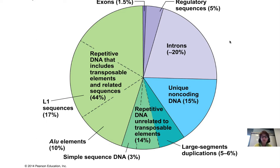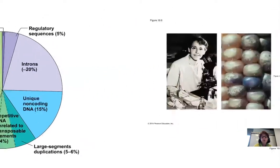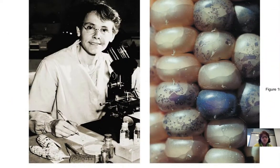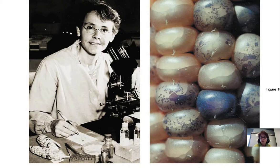I don't expect you to memorize all of these — I'd like you to be aware of the complexity of the genome and maybe be excited that there is something to study when you go off to grad school. Barbara McClintock did her work in the middle of the 1900s — the 1940s, 50s, 60s — and she continued working into the 80s and 90s. She was very meticulous, studied corn or maize, and studied color changes in corn kernels, discovering what we now know as transposons or movable elements in DNA.